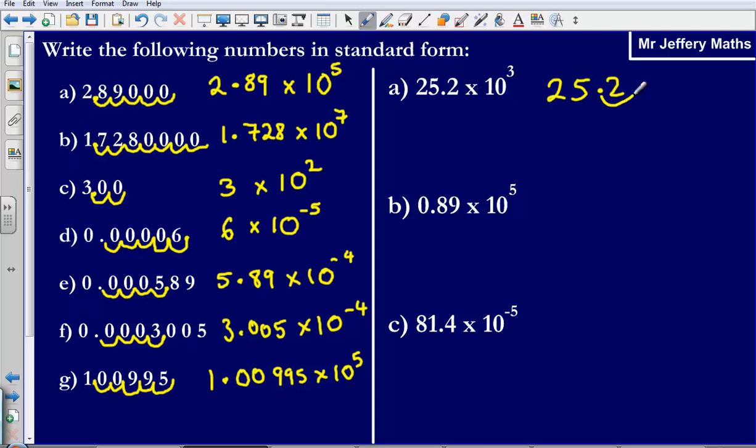So the decimal point is moving along 1, 2, 3 places. So what we could say is that this number here is the same as 25,200.